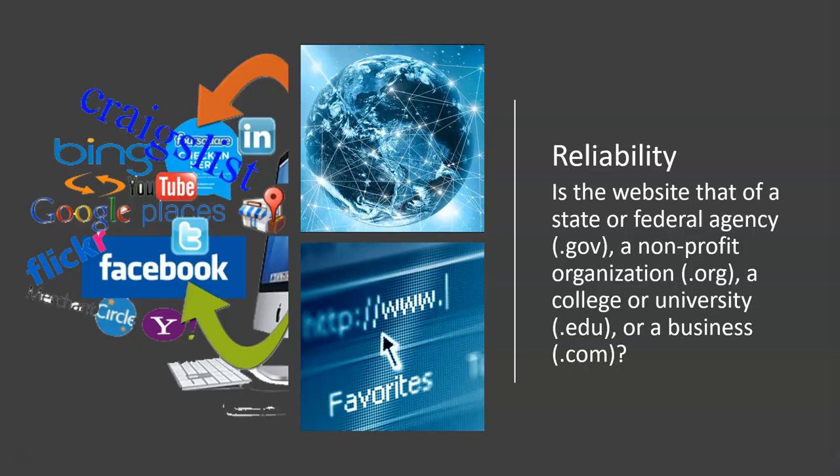Reliability: Is the website that of a state or federal agency? Is there a .gov at the end of the web address? A non-profit organization, .org? Lots of times these are museums, churches, or political organizations — the Democratic Party, Republican Party, or the Green Party. A college or university, .edu? Or a business, .com? .coms exist to try to sell you something — keep that in mind.